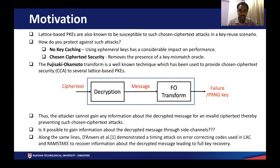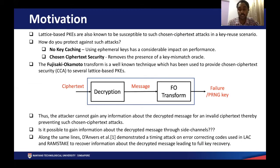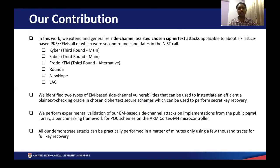D'Anvers et al. demonstrated such an attack where they utilize timing information over variable-time implementations of error-correcting codes used in a couple of post-quantum schemes, LAC and RAMSTAKE, to recover some information about the decrypted message, and were subsequently able to perform a full key recovery. This work raised several questions about the existence of other side-channel information that could potentially be used to perform such attacks. In this work, we externalize such approaches and apply the attacks over six lattice-based schemes that were all second-round candidates in the NIST standardization process for post-quantum cryptography.